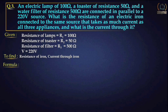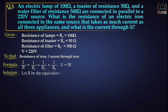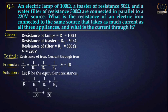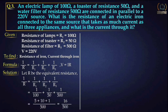The formula used is 1/R = 1/R1 + 1/R2 + 1/R3 and V equal to IR. Let R be the equivalent resistance. Writing the formula and putting in the values, we get R equal to 500 by 16.